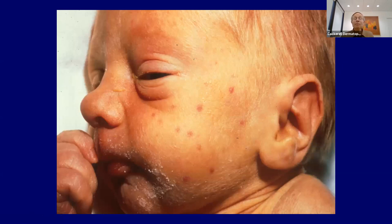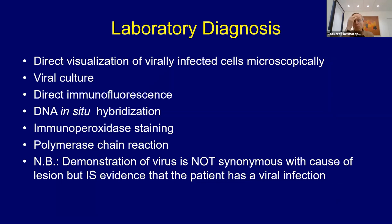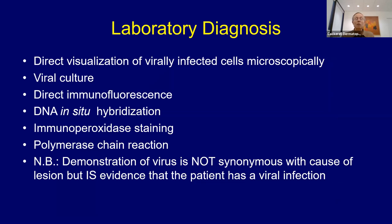A child with blueberry muffin syndrome shows extramedullary hematopoiesis due to CMV causing bone marrow suppression. One HIV-infected cachectic gentleman developed hyperpigmentation due to CMV involvement in his adrenal gland causing adrenal failure. Diagnosis ideally involves seeing the cells under microscopy; viral cultures, direct immunofluorescence, DNA in situ hybridization, immunoperoxidase stains, or PCR can also be used. If you see the virus in the ulcer it may not be the cause, but it is a sign the patient has CMV infection.